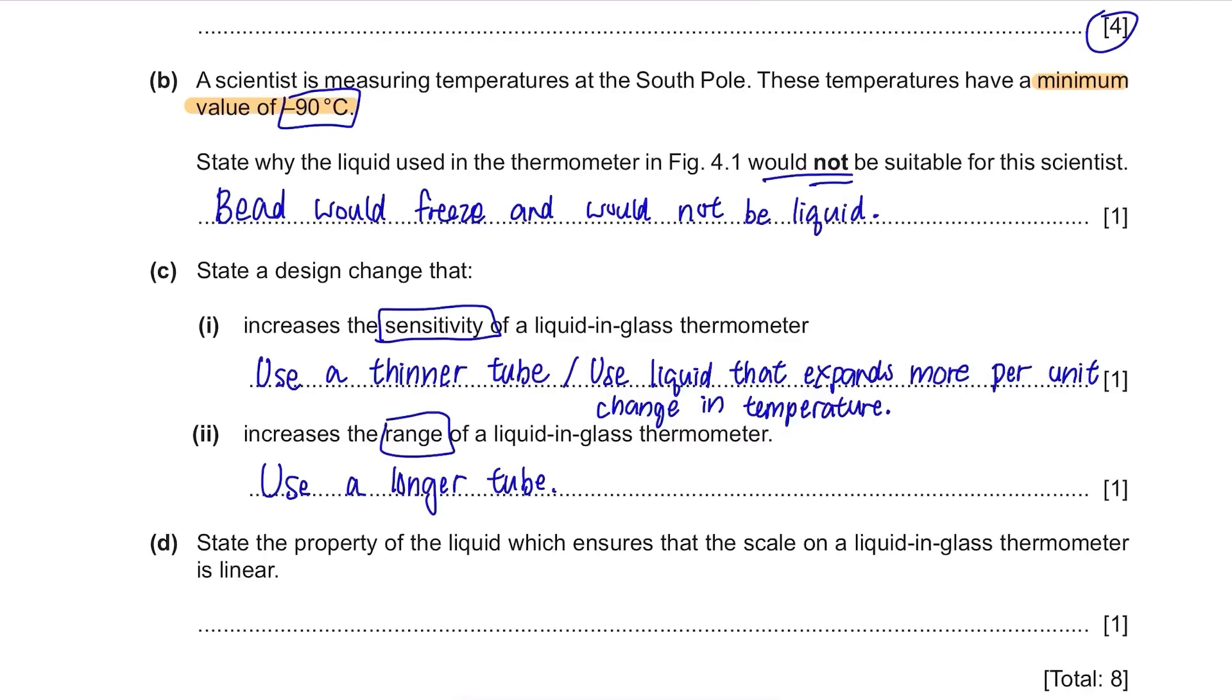Part D. State the property of the liquid which ensures that the scale on the liquid in glass thermometer is linear. Only certain types of liquid with this property can be used in liquid in glass thermometers. It's when they expand uniformly with temperature. For example, if it expands by 1 cm³ for 1 degree Celsius change, it needs to expand by 10 cm³ for 10 degree Celsius change.